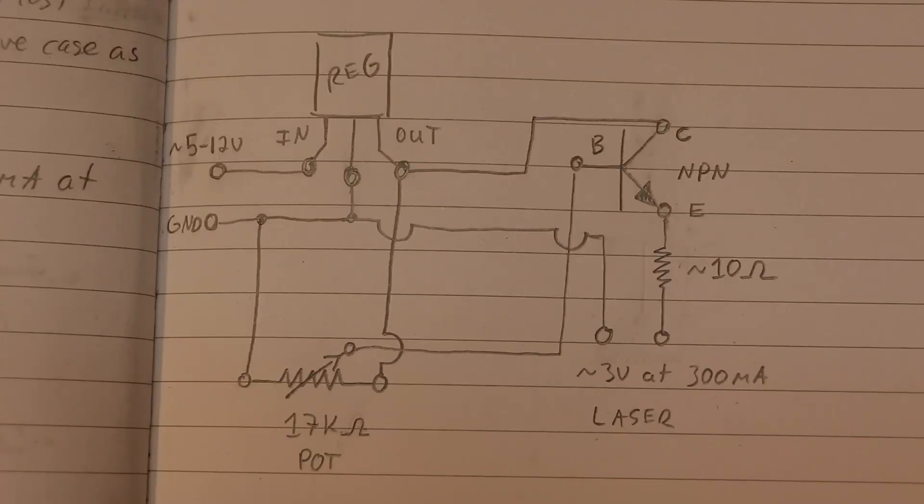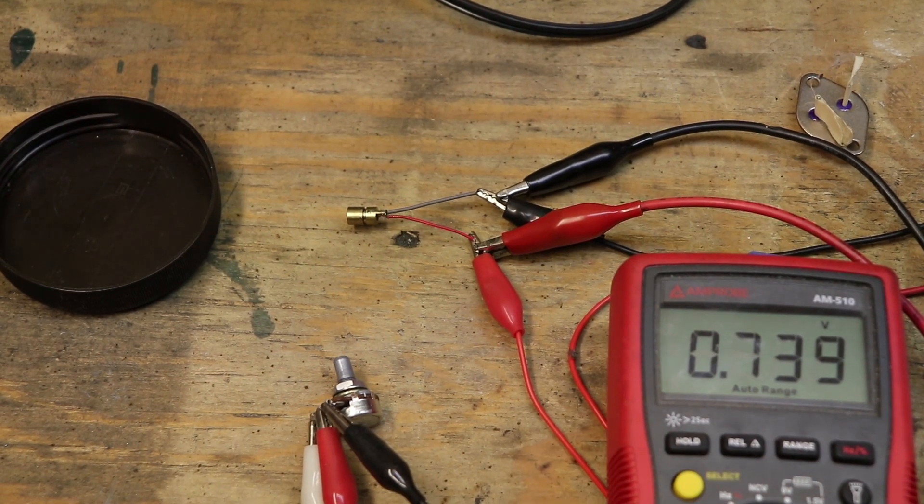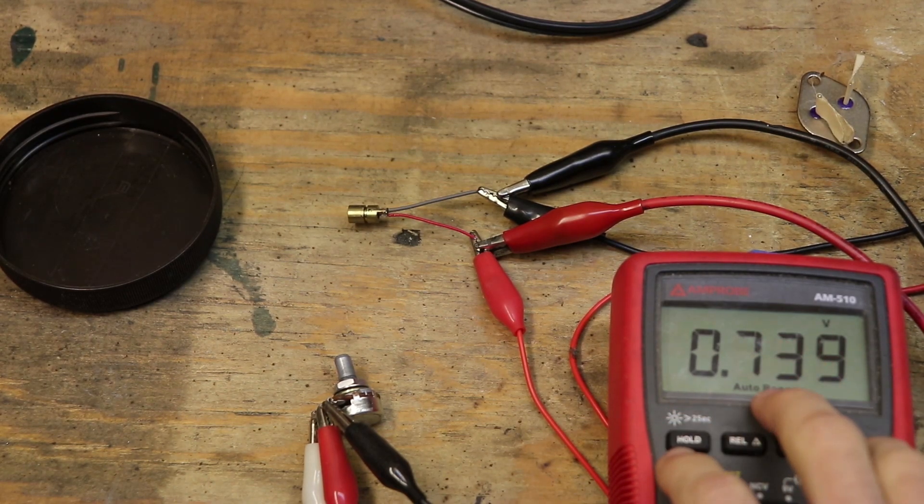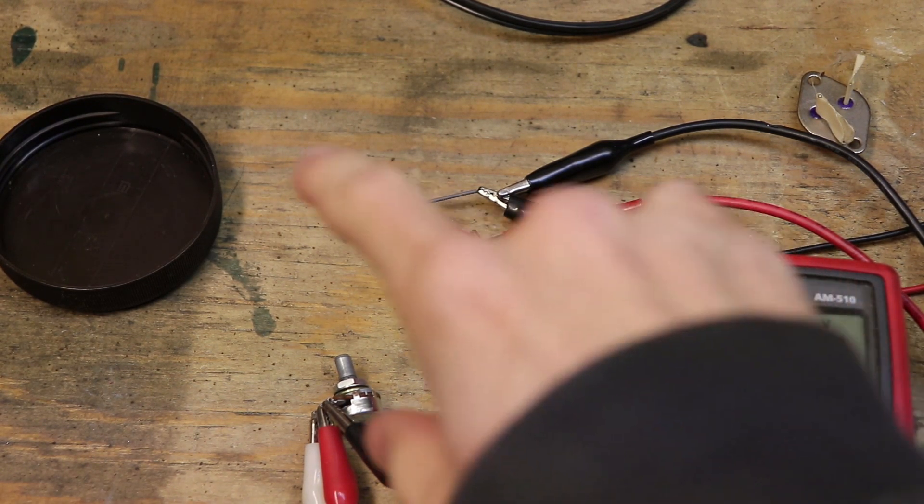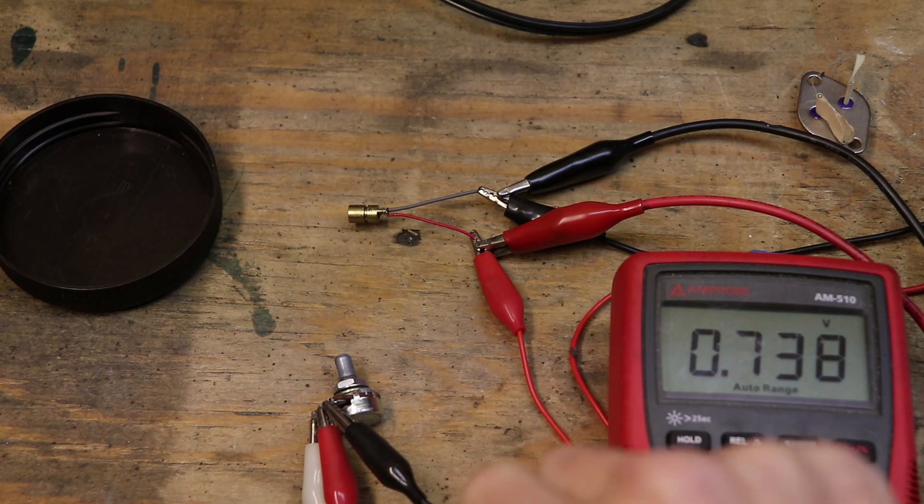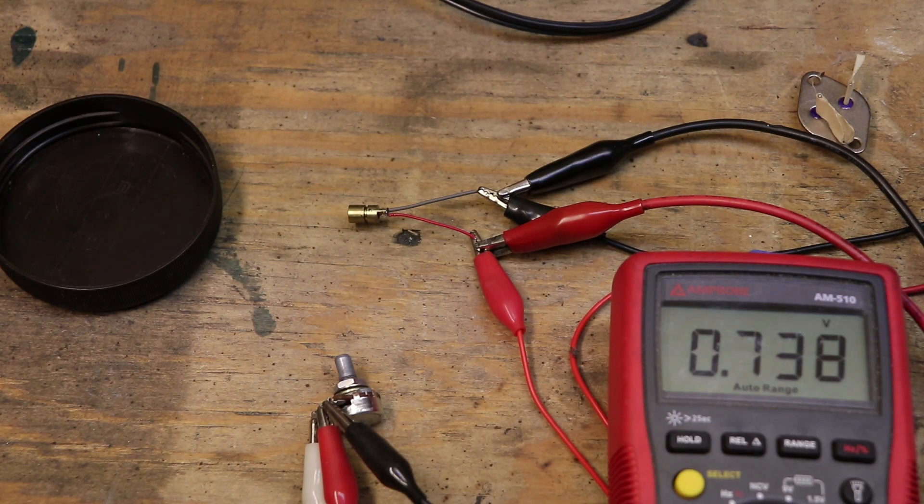Here's the circuit that I'm using just to test out the laser diodes. It's a little messy but this is the setup. I have my multimeter on its voltage setting in parallel with the laser and I have my potentiometer right there.